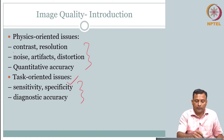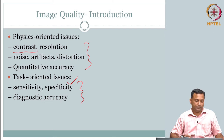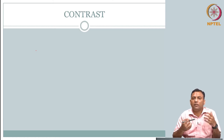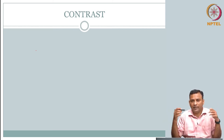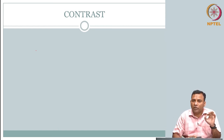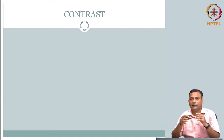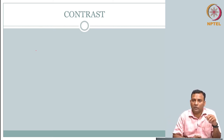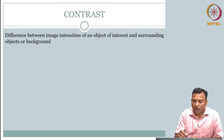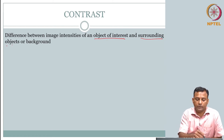Let us move on. The first image quality metric we would like to understand is contrast. What comes to mind when I say contrast? Broadly, contrast means something is different — something you are looking at is different from the surrounding. That is how you use the word in colloquial terms: 'in contrast to somebody else.' Each time you analyze carefully, you use this word to capture how you tell one thing apart from another — the target from the background. To put it in our perspective: the difference between image intensities of an object of interest and the surrounding object or background.